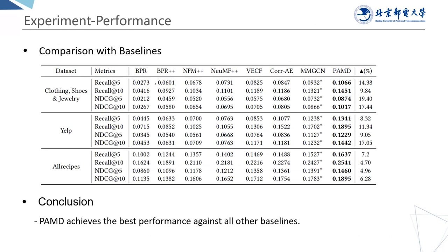We compare our model with seven baselines, including one traditional recommender, three modality recommenders, three enhanced recommenders, and three multi-modal recommenders. As shown in the table, by incorporating multi-modal information, BPR with extra features performs better than plain BPR. Core AE performs consistently better than VECF across all three datasets. MMGCN obtains better performance than Core AE. Finally, by leveraging both modality common and modality specific item representations, our proposed PAMD achieves significantly better recommendation performance across all three datasets in terms of both recall and NDCG.